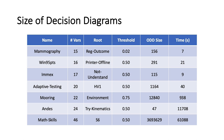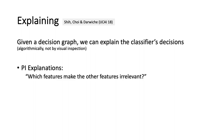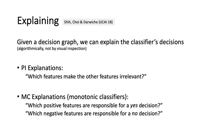What can you do with these symbolic representations once you obtain them? The first thing we did is explanation. In an explanation, you have a box, you feed it an instance, it comes up with a decision, and you ask: why did you make that decision? We propose a couple of types of explanations. The simplest, called a PI explanation, identifies a subset of your instance features that, if fixed, the decision will stick regardless of what the remaining features are. There's also a similar explanation called MC explanations, more appropriate for monotonic classifiers.